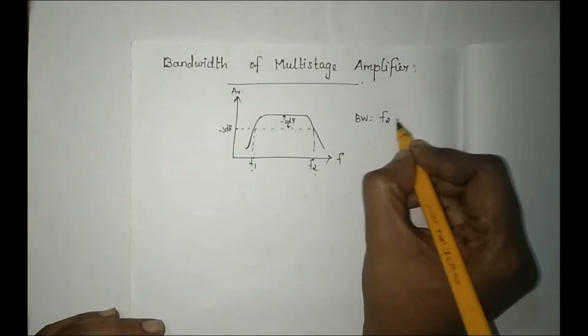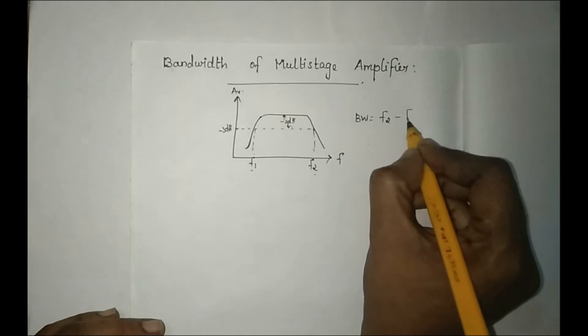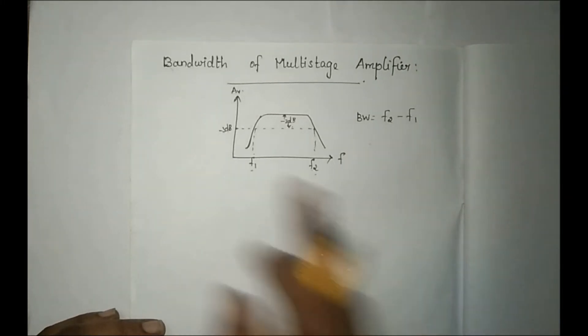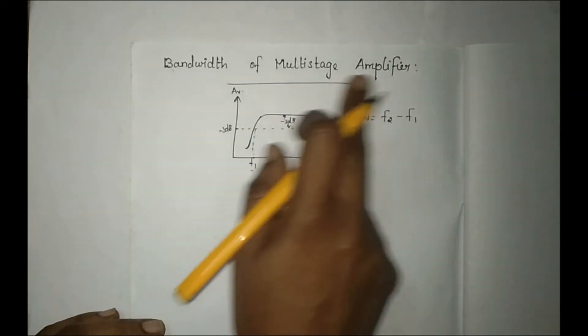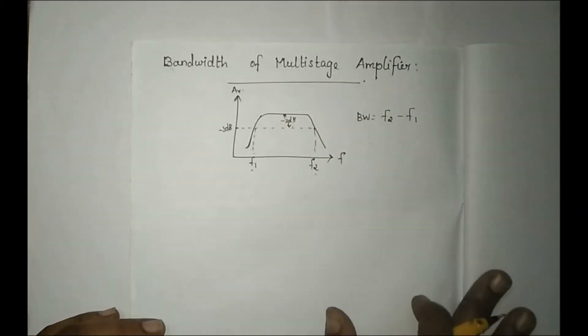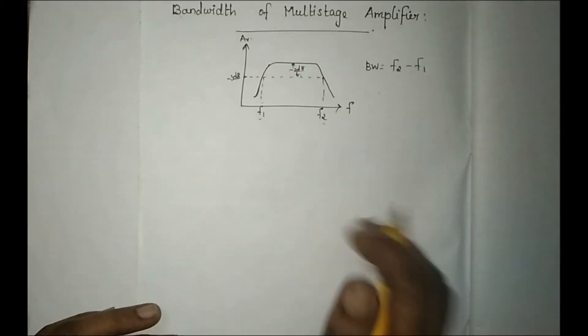So bandwidth is equal to the upper cutoff frequency minus the lower cutoff frequency — the difference between upper cutoff frequency and lower cutoff frequency. So this is the bandwidth of the multi-stage amplifier.